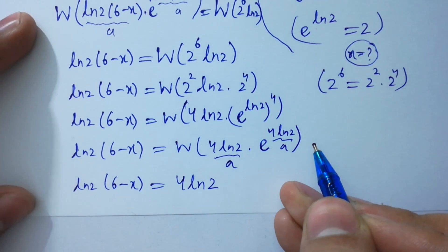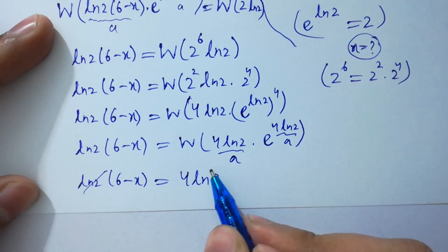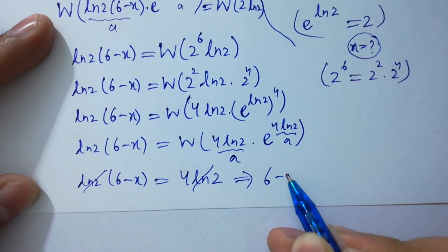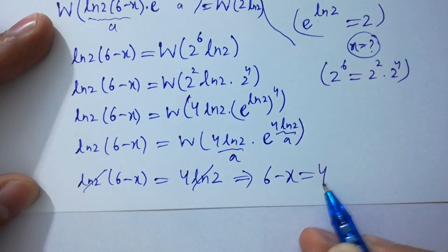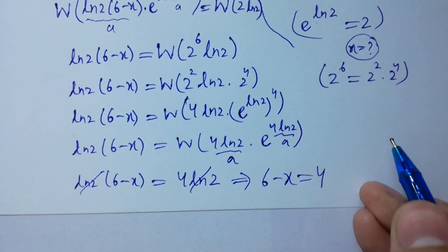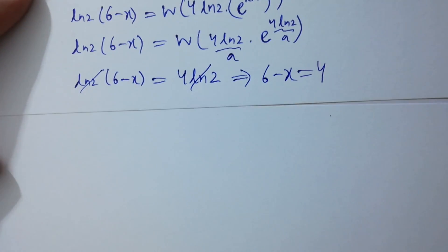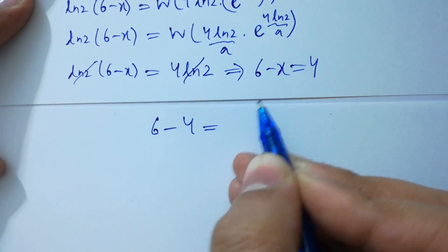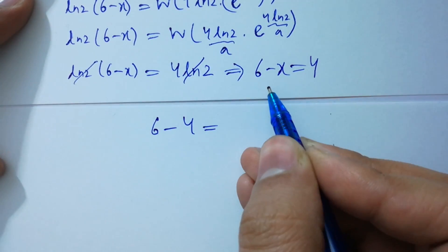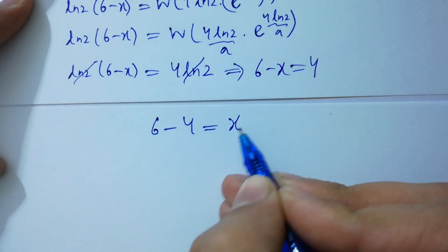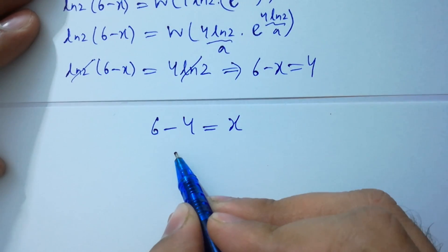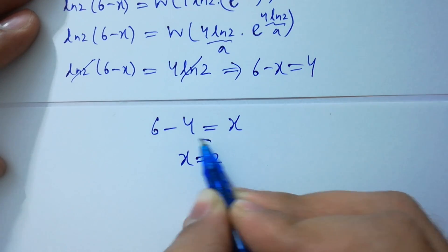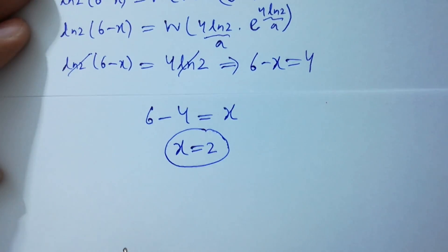In the next step, natural log 2 cancels on both sides, giving us 6 minus x equals 4. Rearranging: 6 minus 4 equals x, so x equals 2.